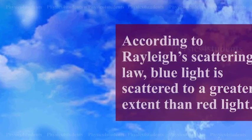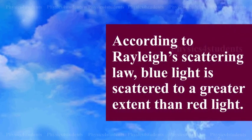The blue appearance of sky is due to scattering of sunlight by the atmosphere. According to Rayleigh Scattering Law, blue light is scattered to a greater extent than red light. This scattered radiation causes the sky to appear blue.